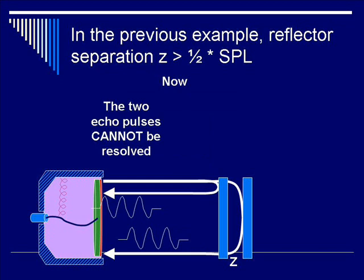And since there is overlap between the two pulses when it gets back to the transducer, the conclusion is that the two echo pulses cannot be resolved and therefore the two reflectors separated by the spacing z cannot be resolved because z is less than SPL over 2.